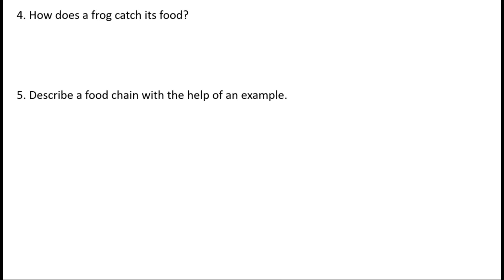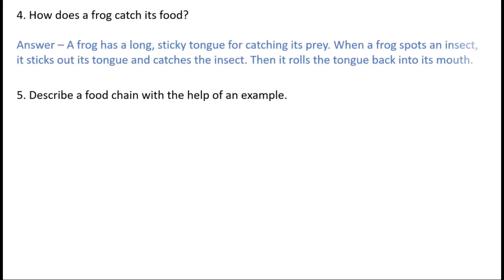How does a frog catch its food? A frog has a long sticky tongue for catching its prey. When a frog spots an insect it sticks out its tongue and catches the insect. Then it rolls the tongue back into its mouth.